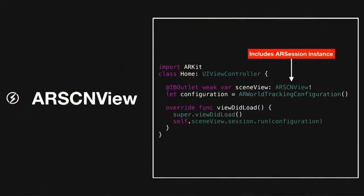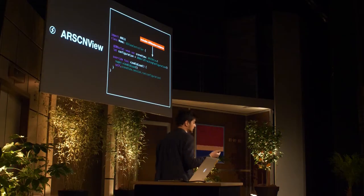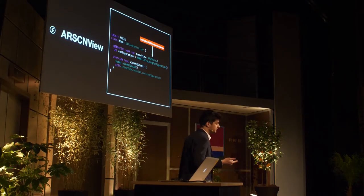The first line of code you should import the ARKit framework and then declare two things: an outlet for the AR scene view and a constant for the AR world tracking configuration. This is going to pretty much tell your device to track your device position at all times during the application.